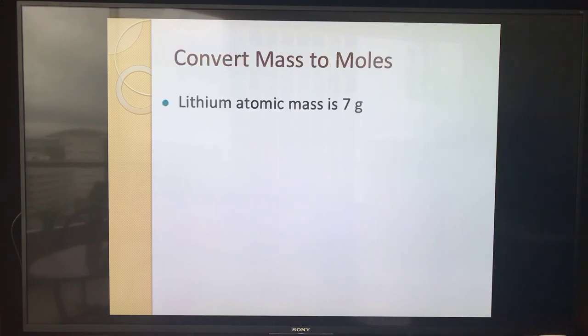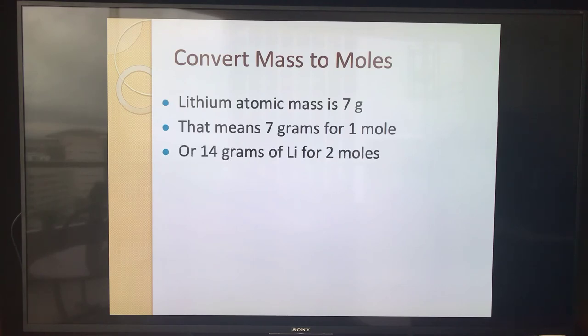So when we want to talk about moles, it's really a very simple conversion. We said that the atomic mass of lithium was 7. You can check your periodic table to verify that. And that means that there are 7 grams in 1 mole. That's it. 7 grams in 1 mole. So if I had 2 moles, then it would be 2 times 7, or 14 grams.